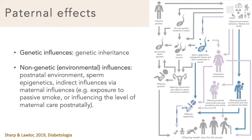Fathers can have indirect influences on child and fetal health through their influence on the mother — for example, by exposing her to passive smoke, domestic violence, or providing emotional and practical support for her before and after the birth of the child.